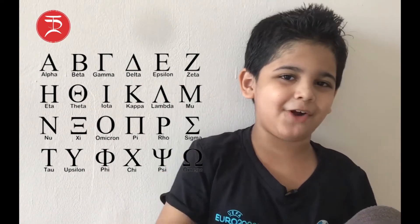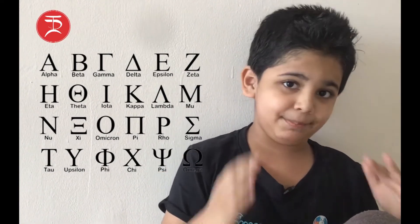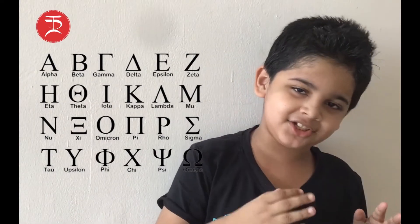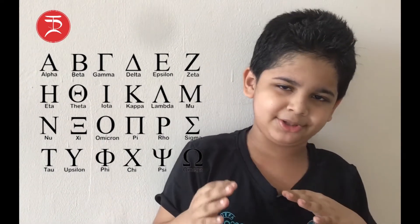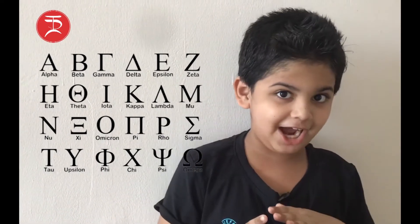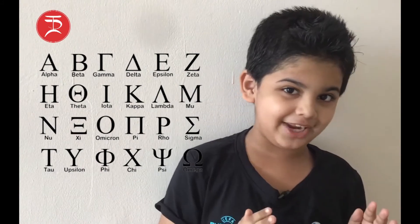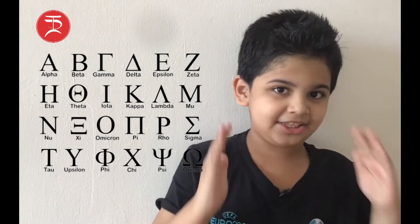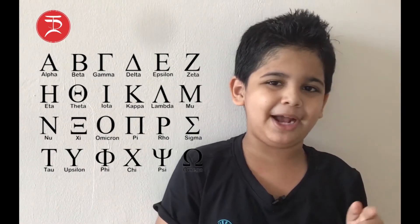In physics, calculations of a large number of physical quantities have to be done, represented by notation and symbols of English and Greek alphabet, such as for the speed of light, wavelength, velocity, and so on. The standard Greek alphabet,